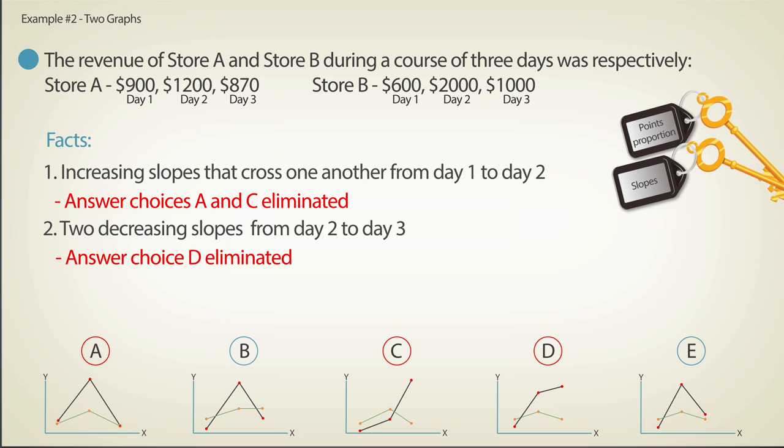Store B had a higher revenue than store A on day two, and this remained so on day three. Therefore, this time we should not expect the lines to cross paths. Of the two remaining options, only graph E fits this description, and we can mark it as the correct answer.